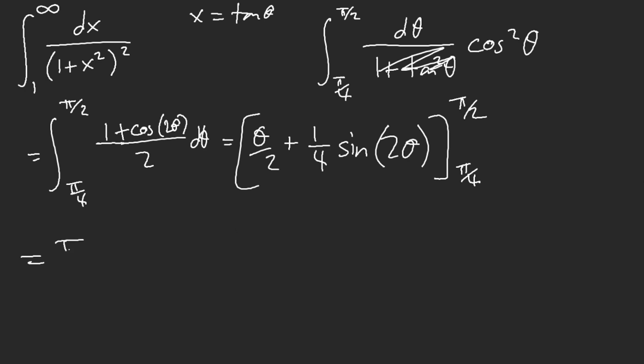Plug in pi over 2, we get pi over 4. Pi over 2 here is going to give us 0. Pi over 4, that's going to be pi over 8.